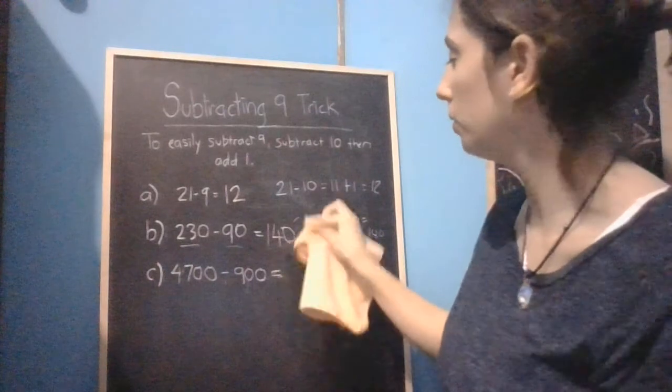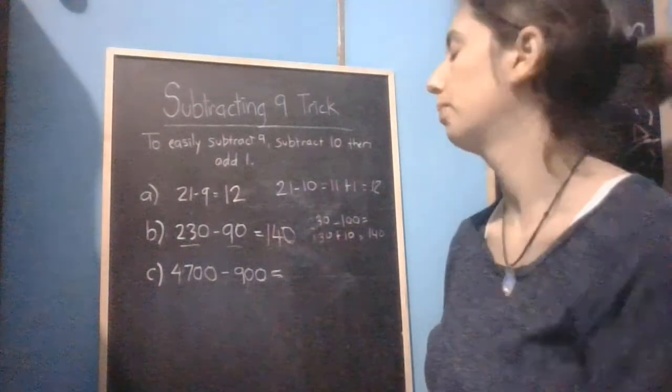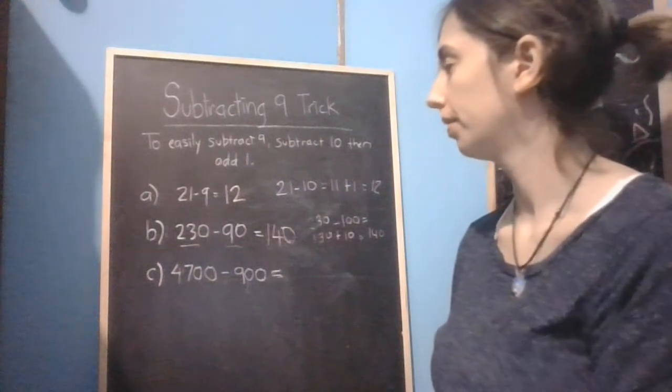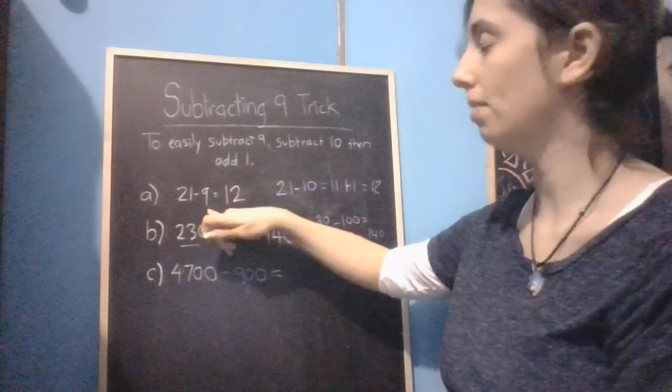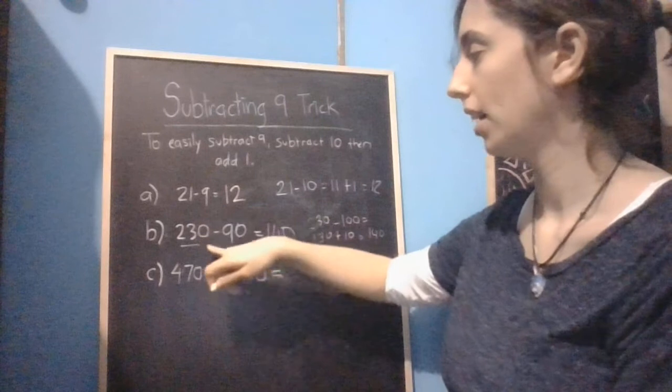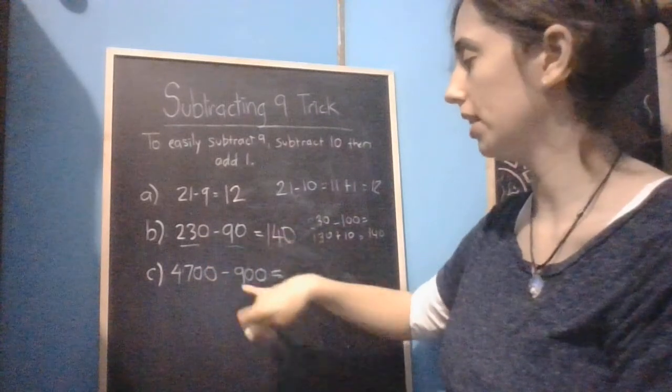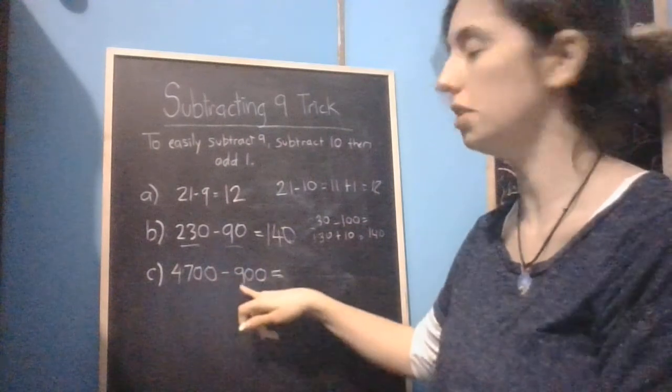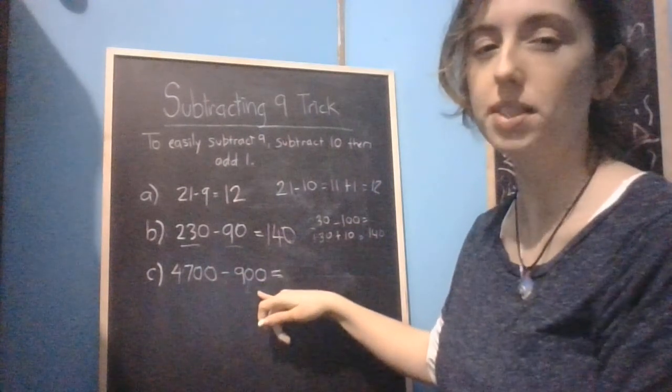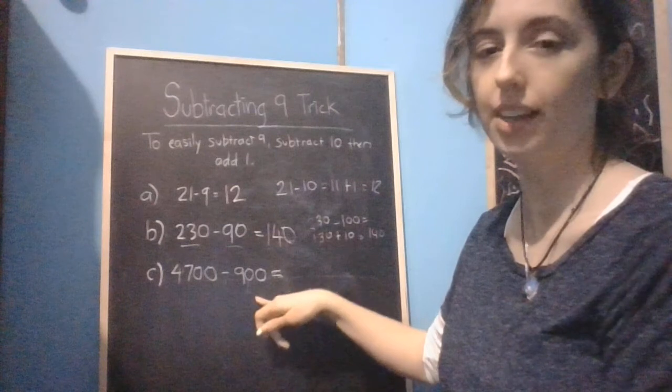Using the same principle, have a think about C. So with 10s, with 9 we rounded it up to 10. For 90 we rounded it up to 100. What about if the number is 900? We're working in the thousands. What are we going to do with that? If you need to pause the video, have a think about it and when you're ready, hit play.